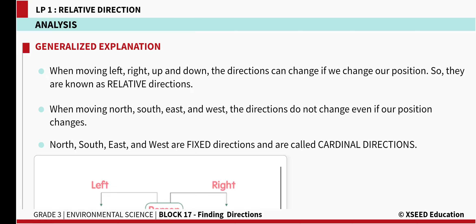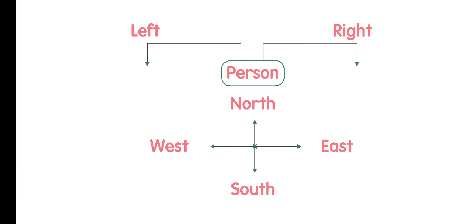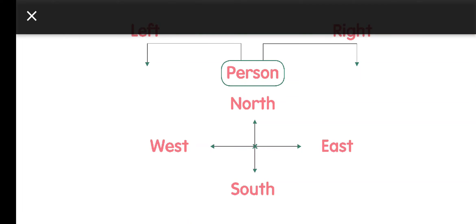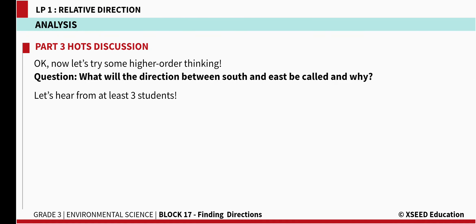If the directions are not changing, they are called cardinal directions. For example, if a person is facing east, that is their right side; facing west is their left side; facing north is the above direction; and facing south is the below direction. A hotspot question: the direction between south and east is called south-east, and we can take any middle direction between two directions as a sub-direction.